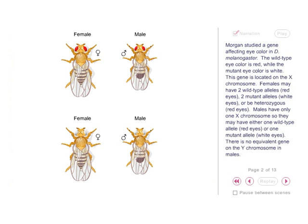Morgan studied a gene affecting eye color in Drosophila melanogaster. The wild-type eye color is red, while the mutant eye color is white. This gene is located on the X chromosome. Females may have two wild-type alleles (red eyes), two mutant alleles (white eyes), or be heterozygous (red eyes). Males have only one X chromosome, so they may have either one wild-type allele (red eyes) or one mutant allele (white eyes). There is no equivalent gene on the Y chromosome in males.